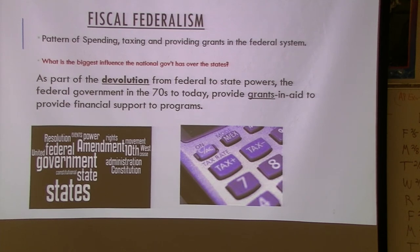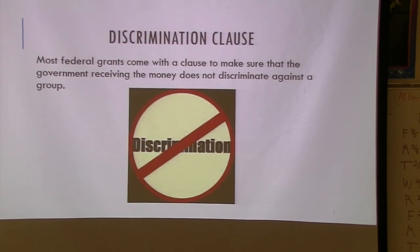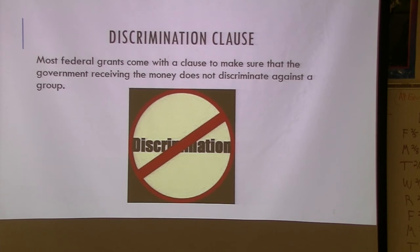One thing that has happened is devolution — since the 70s, starting with Nixon — where over time there are more and more programs states must carry out. Money is given, but not always. One thing built into grants are discrimination clauses — a way to make sure states comply. For example, money coming to Citrus County schools would be stopped if the county decided to segregate. Title IX works the same way for gender equity. This is how the federal government was able to extend its power into the states.